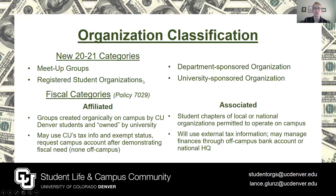Student Life uses two sets of categories to classify recognized organizations. The first set was created this fall to better describe clubs' day-to-day relationships with the university. These clubs vary in their requirements for good standing and the amount of support provided by CU Denver. We will skip over them today, but registered student organizations and department-sponsored organizations are those eligible for SGA funding and would have any campus accounts overseen by Student Life. Underlying these categories is a fiscal classification of groups via policy 7029: affiliated and associated.